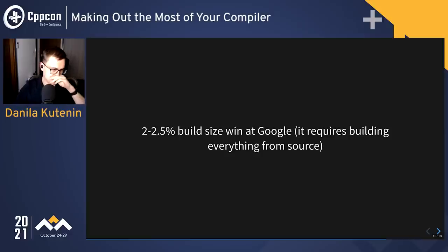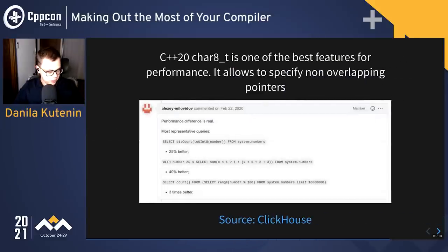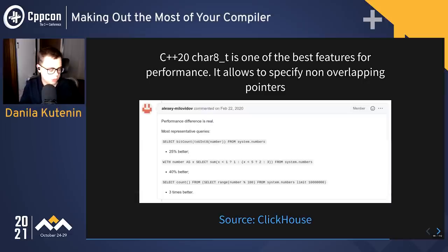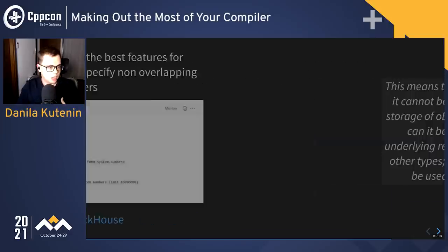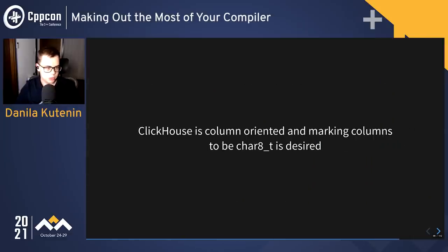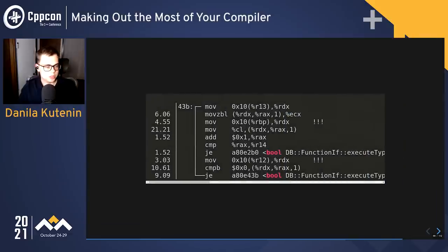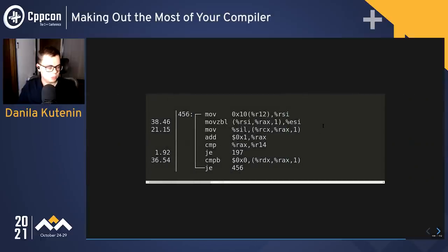It requires building from source. Standard also progresses: C++20 has std::byte. The difference between char and std::byte is that std::byte cannot overlap with any other data, whereas char pointers can alias. We saw significant gains from that in ClickHouse because ClickHouse is a column-oriented system and marking columns with std::byte is quite desirable. The loop had moves used to avoid pointer aliasing, and those were just removed, giving us better performance.